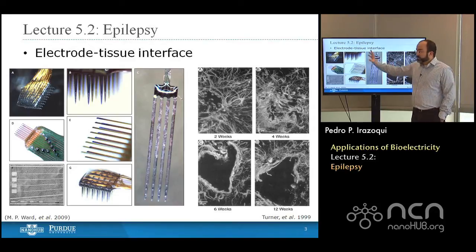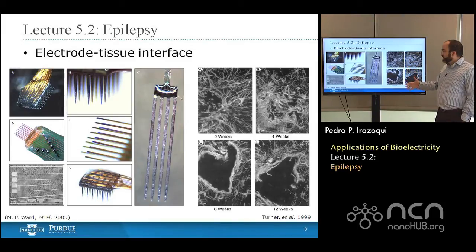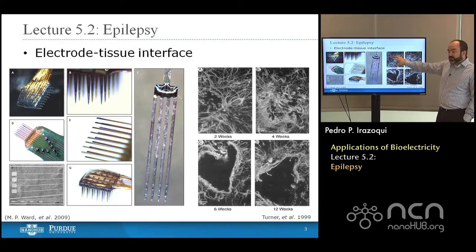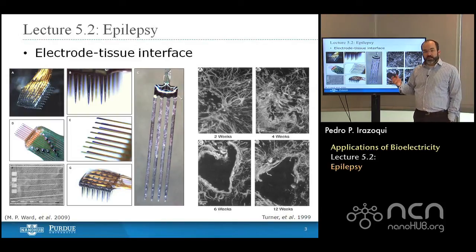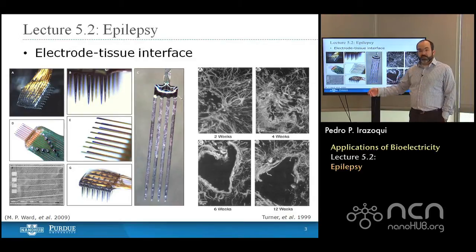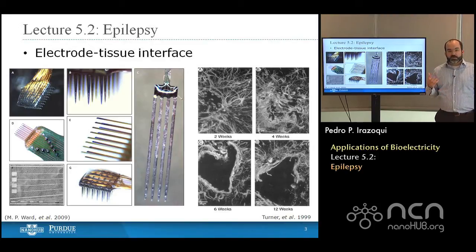The problem is that all commercially available electrodes have the same issue: if you put them in the brain — and here are some photographs of brain slices weeks after electrode implantation and stained — you can see that initially there's just a little increase in glial scarring, but over time you get a very defined glial scar around the electrode site. That scar creates a high impedance interface between the electrode and the tissue, which leads to decreased signal-to-noise ratio and makes it impossible to record a signal reliably.